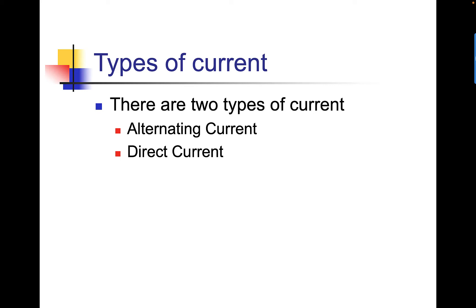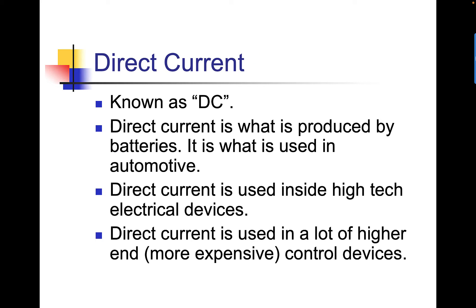There are two types of current. Alternating current and direct current. Direct current is known as DC. Direct current is what is produced in batteries.